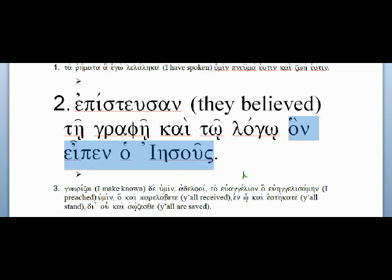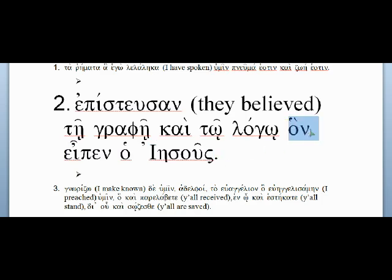In the relative clause you have 'which' and then a verb you learned as 'spoke' or 'said.' In this case Jesus is the subject, so that should be clear enough: 'which Jesus spoke.' You can get the sentence 'they believed the scripture and the word which Jesus spoke,' but you really need to think through what that relative pronoun is doing, because that makes the big difference in Greek for understanding how the sentence fits together.